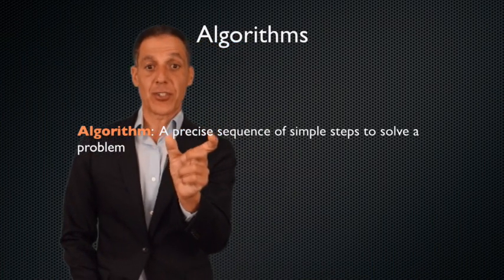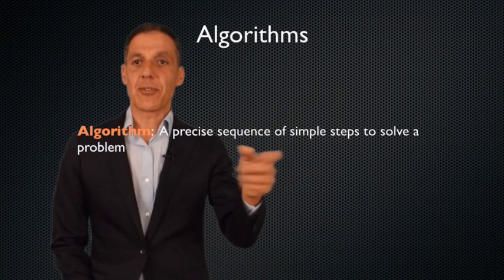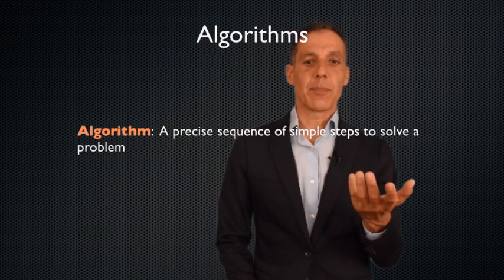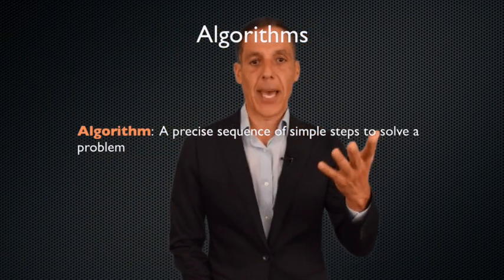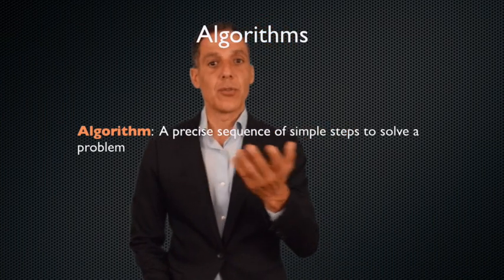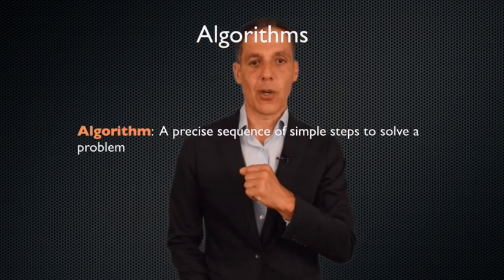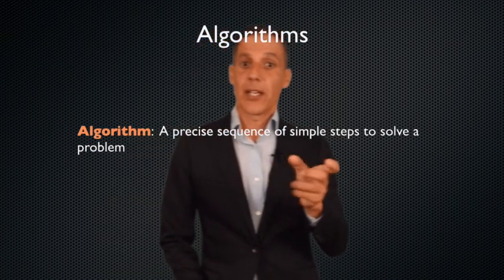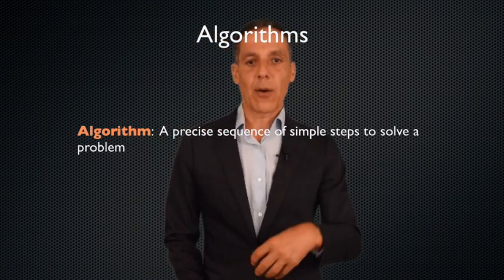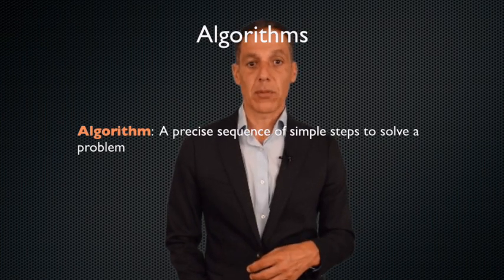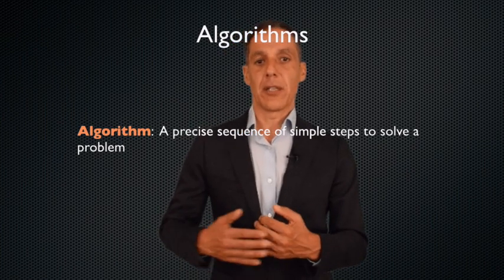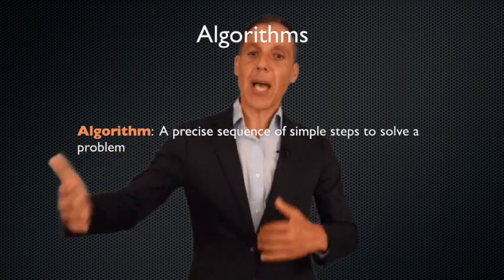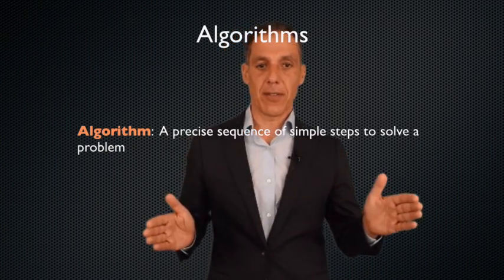Let me start with a simple definition. An algorithm is a precise sequence of simple steps to solve a problem. The first important word is precision. The sequence of steps have to be precise. For example, if I gave you a recipe to bake a cake, I wouldn't say make the batter. If I was giving you directions to go to San Francisco, I wouldn't say drive to San Francisco. In a recipe, I wouldn't say put some flour into the big bowl. How much? In driving directions, I wouldn't say drive on this road. I would say drive this many miles on the road.